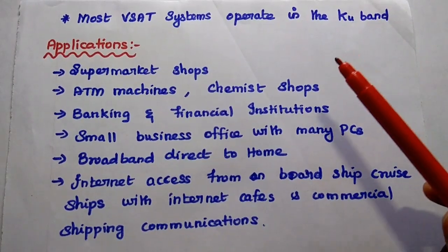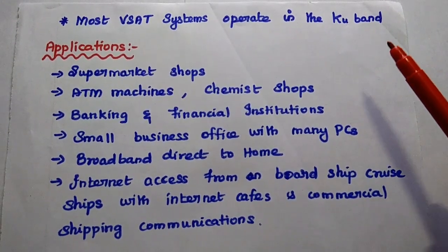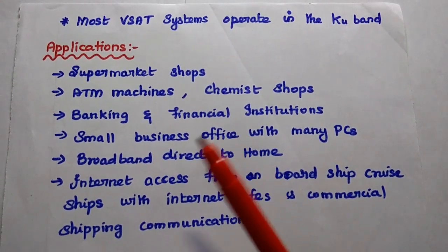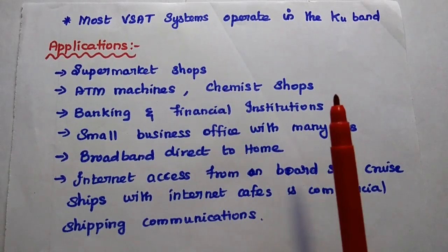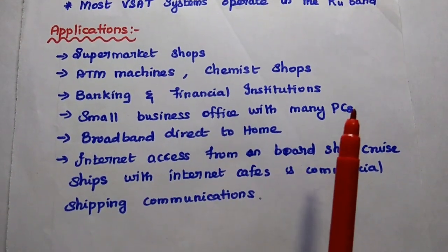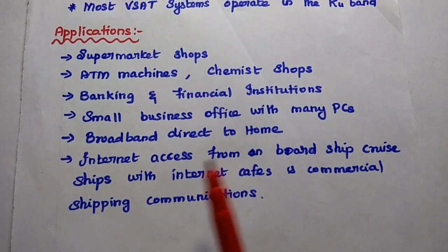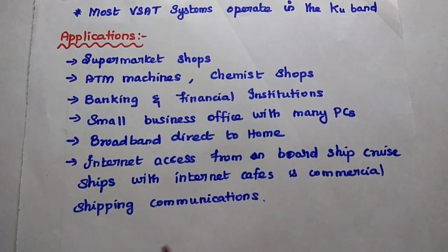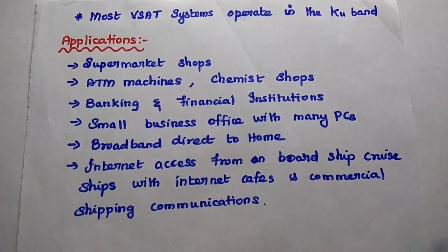Most V-SAT systems operate in the Ku-Band, and some services are also available in C-Band. The major applications of V-SAT systems include supermarket shops, ATM machines, chemist shops and pharmacies, banking and financial institutions, small business offices with private networks, broadband direct to home, and internet access for on-board ship crews, internet cafes, and commercial shipping communities.